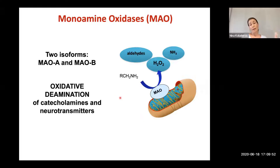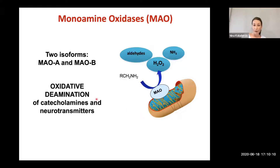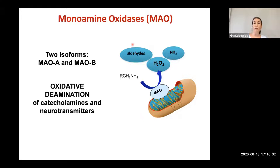Monoamine oxidases have been studied extensively at the level of the central nervous system. A number of MAO inhibitors have been developed over the years and are still used in the clinic for treatment of psychiatric disorders. By blocking MAO activity, one can spare the levels of neurotransmitters such as serotonin or dopamine that are involved in the development of depression. However, not many people were looking at what could be the role of products of MAO activity, or whether this enzyme could play a role in the cardiovascular system.